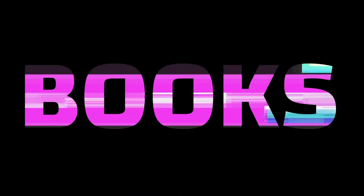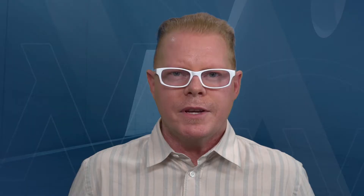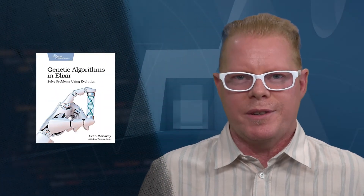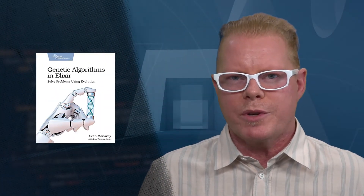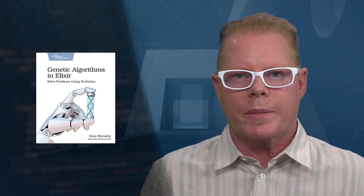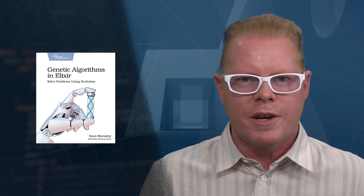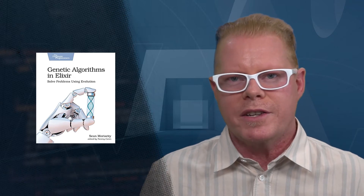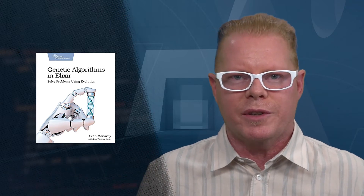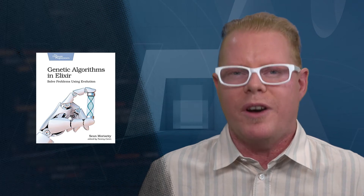Now let's quickly spotlight a few recent books that might interest you. Genetic Algorithms in Elixir: Solved Problems Using Evolution by Sean Moriarty is for programmers with some experience or familiarity working with Elixir who are looking to expand their knowledge into the field of genetic algorithms. This book is available on Amazon.